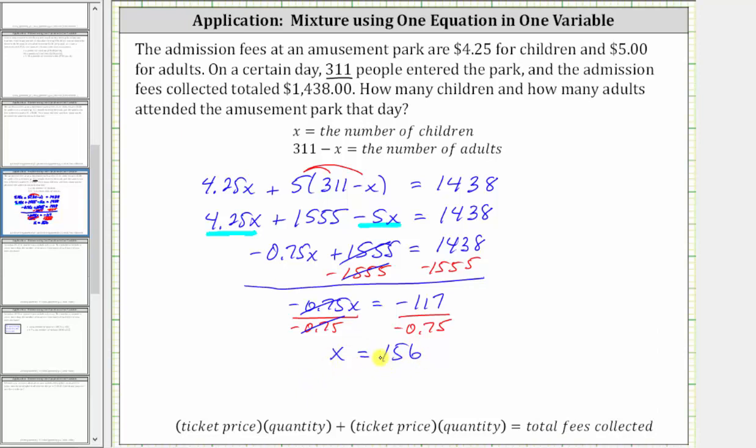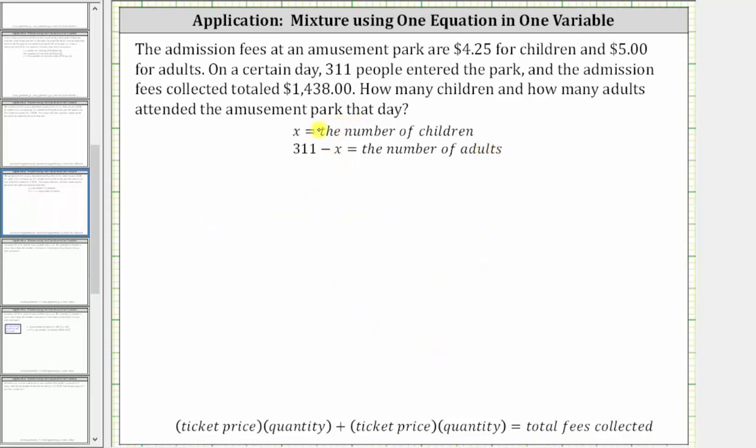Now that we know the value of x, we can determine the number of children and the number of adults. We just found that x is equal to 156, which is the number of children. The number of adults is equal to 311 minus x, which is equal to 311 minus 156, which is equal to 155. So 156 children and 155 adults entered the park.